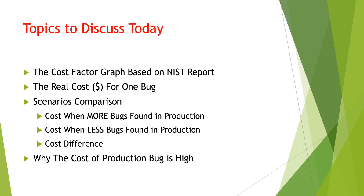One scenario is where we find more bugs in production and another is where we find fewer bugs in production. We will do a cost comparison between these two scenarios, understand how much money we can save by reducing production bugs, and at the end understand why the cost of a production bug is high and what factors play an important role in that higher cost.